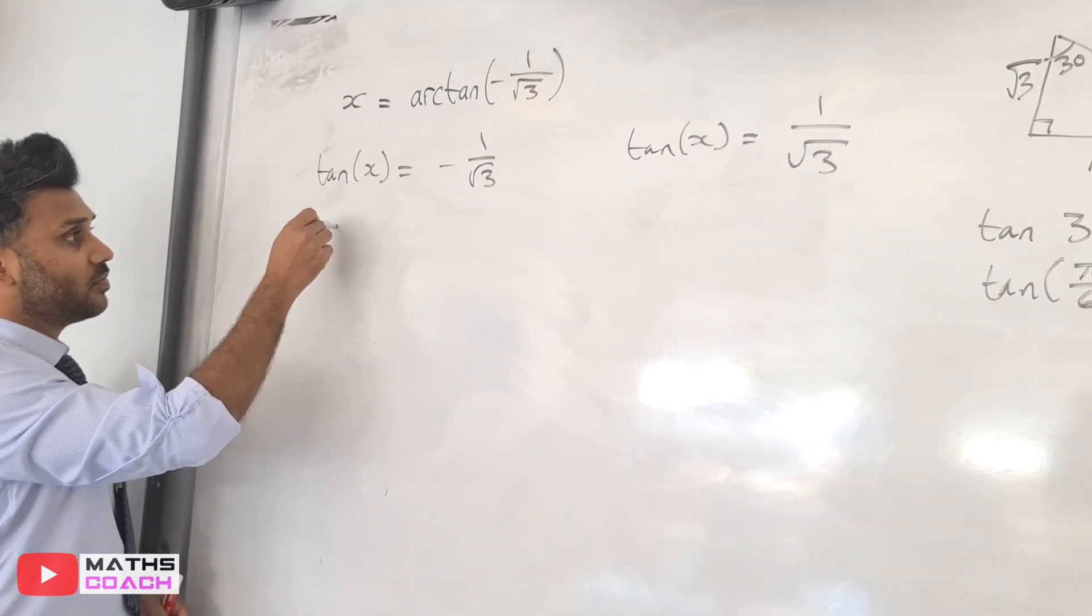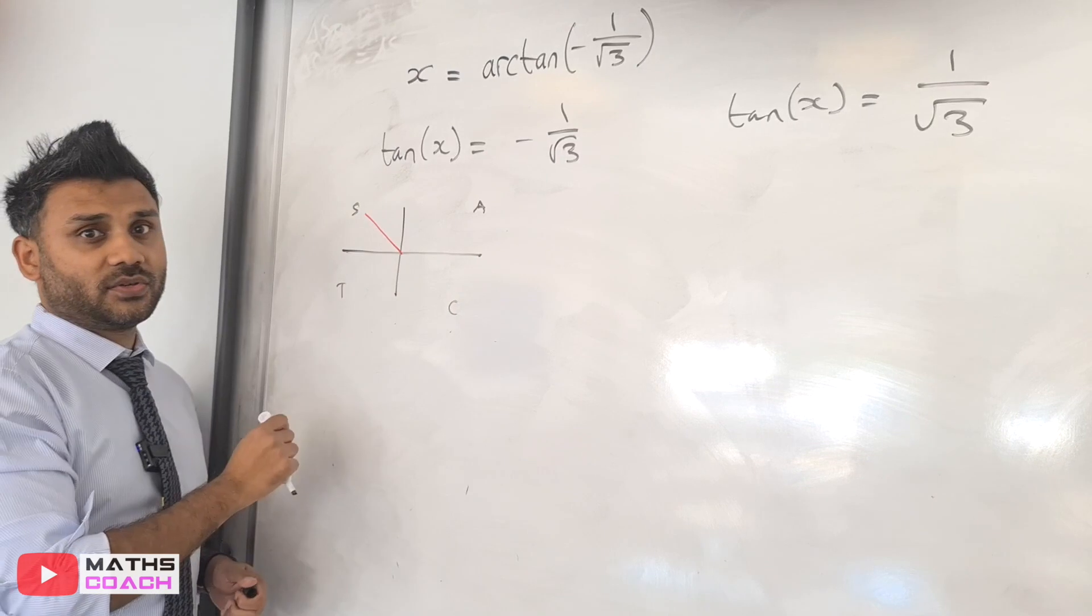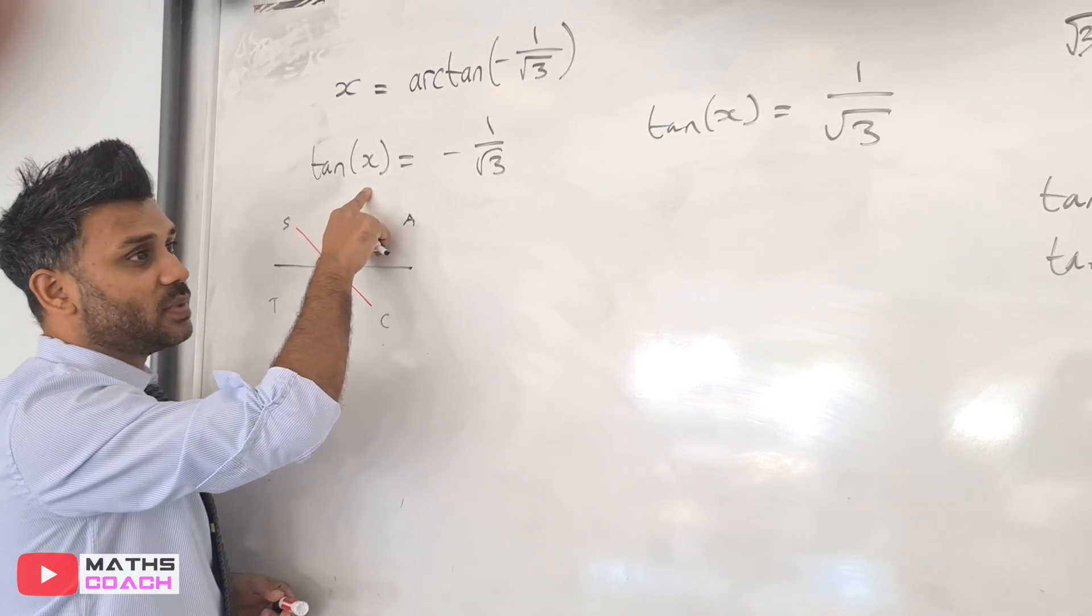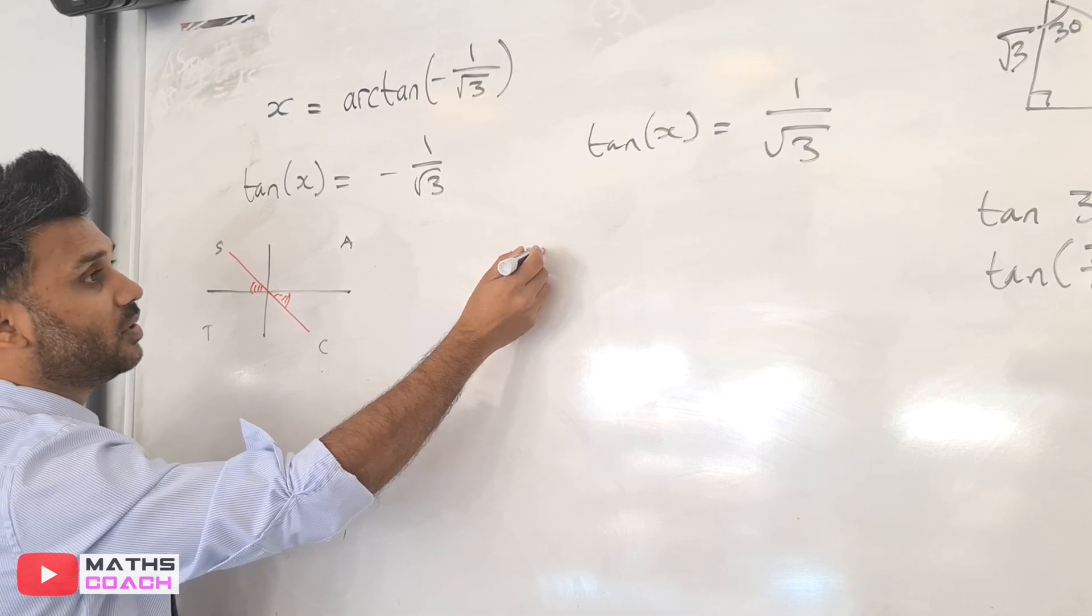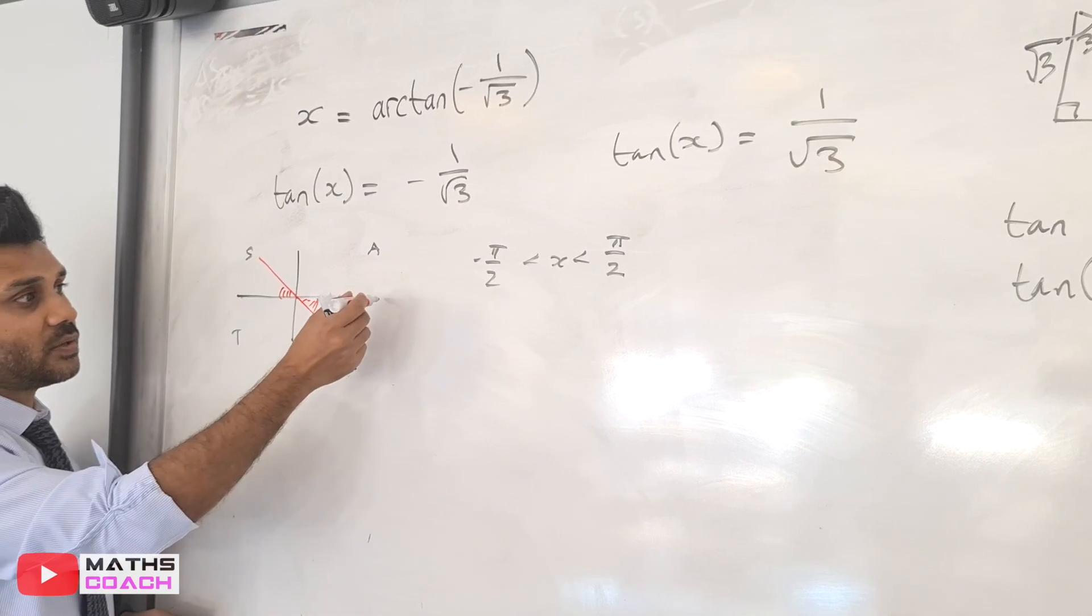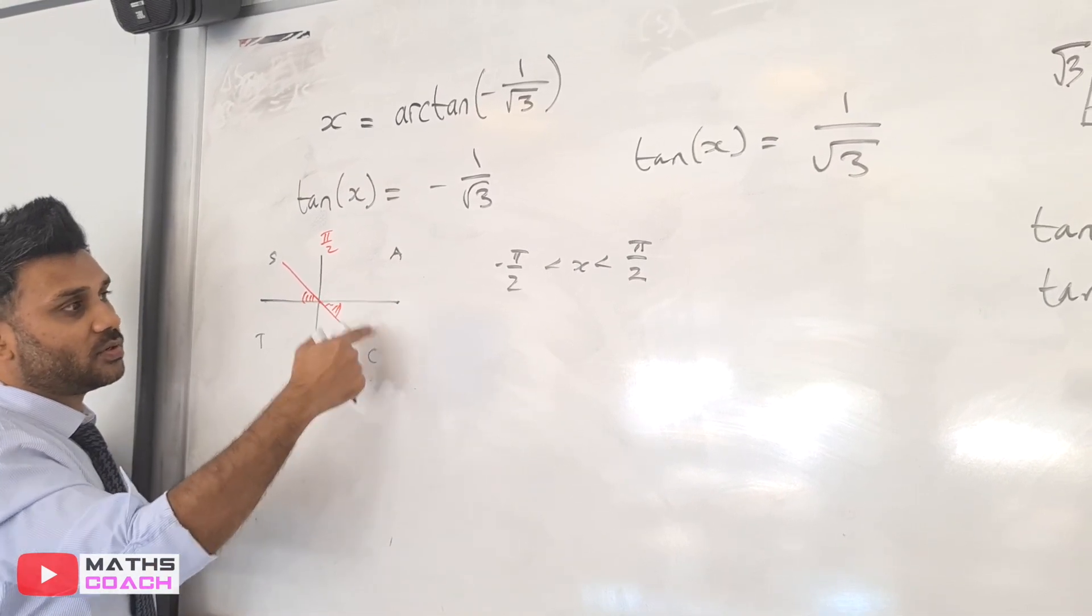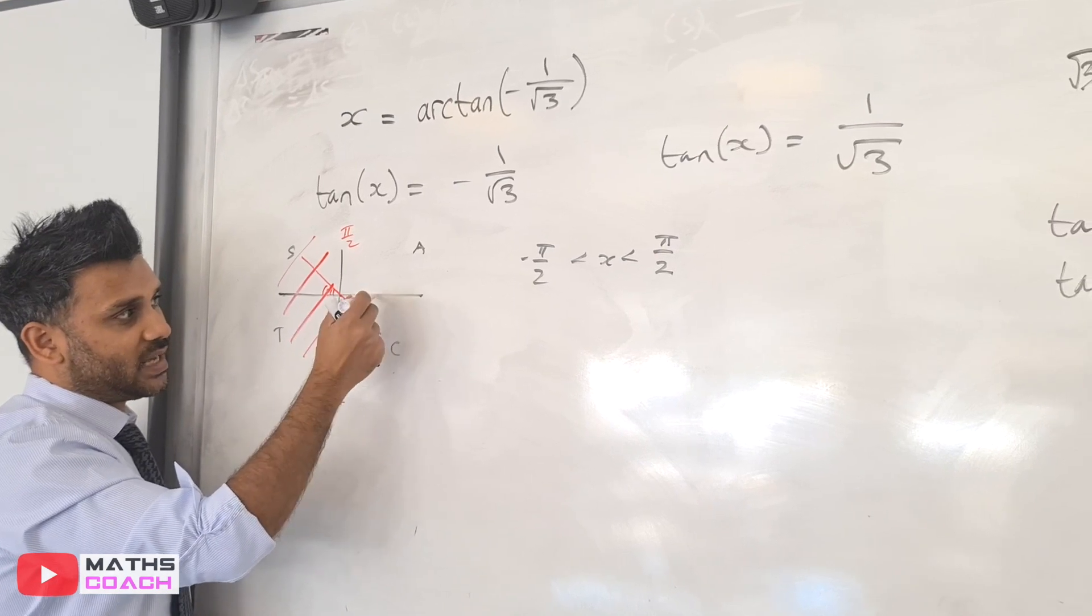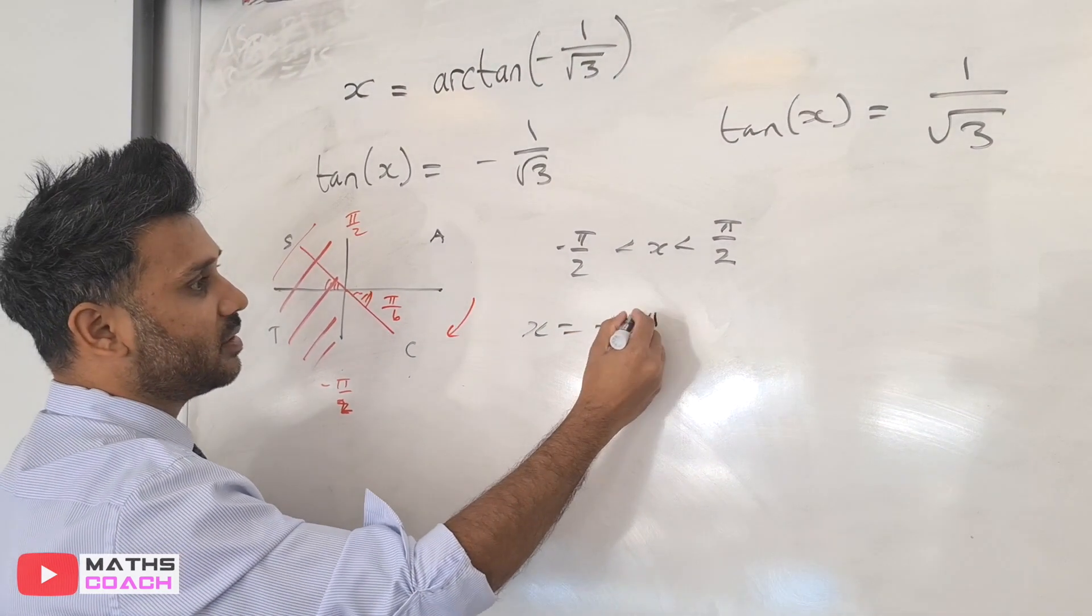So if we look in the CAST diagram—C, A, S, T—tan is negative in the sine quadrant and it's negative in the cosine quadrant, so there's two possible answers in this diagram. But for our arctan to exist, tan has to be a one-to-one function, and we saw that in PM2 that tan is one-to-one for angles between -π/2 and π/2, that's -90 degrees and 90 degrees. So that's going up to π/2 and that goes down to -π/2. So we're allowed to be in these two quadrants, but not these two quadrants. Now from two solutions we're running down to one solution, and this angle here is π/6, and because we're going downwards here, x is therefore -π/6, and that's our solution.